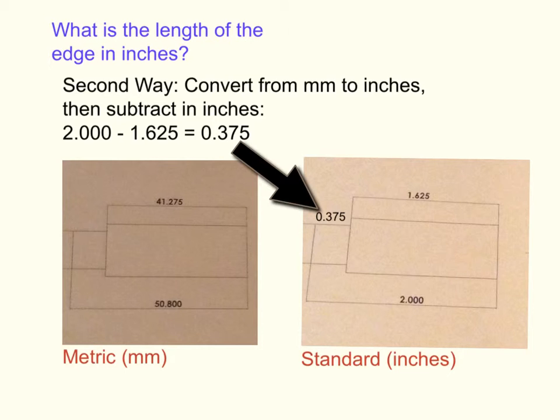Another way to find the length of that edge in inches is to first convert from millimeters to inches and then subtract in inches. So convert 50.800 to 2.000 and 41.275 to 1.625 inches, and then subtract 2.000 minus 1.625 inches, equals again 375 thousandths of an inch.